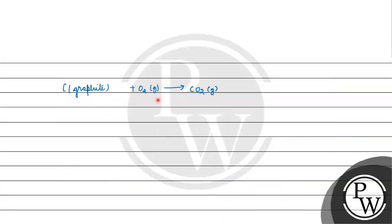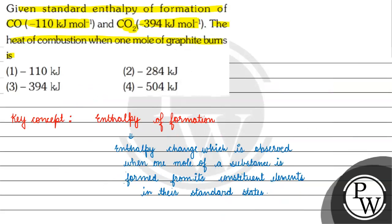We already saw that the energy change for this reaction is minus 394 kilojoule per mole, and this reaction is the same as the formation reaction for CO₂. So the heat of combustion will be minus 394 kilojoule per mole. The correct answer for this question is option C. I hope you understood it well — thank you and all the best.